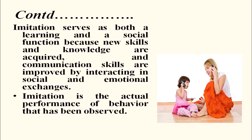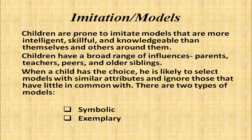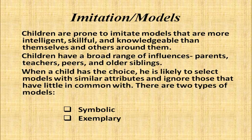Imitation serves as both a learning and a social function because new skills and knowledge are acquired and communication skills are improved by interacting in social and emotional exchanges. Imitation is the actual performance of behavior that has been observed. Children are prone to imitate models that are more intelligent, skillful, and knowledgeable than themselves. Children have a broad range of influences — they get influenced by parents, their teachers, peers, and older siblings or classmates. When a child has the choice, he is likely to select a model with similar attributes and ignore those that have little in common. There are two types of models: symbolic and exemplary.